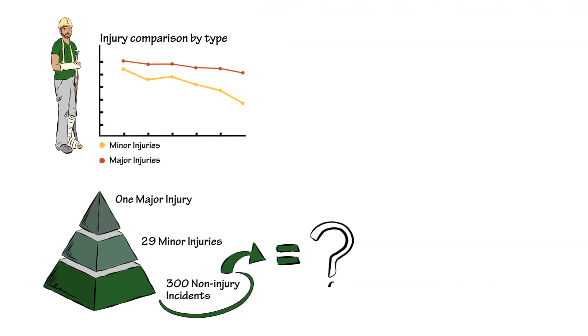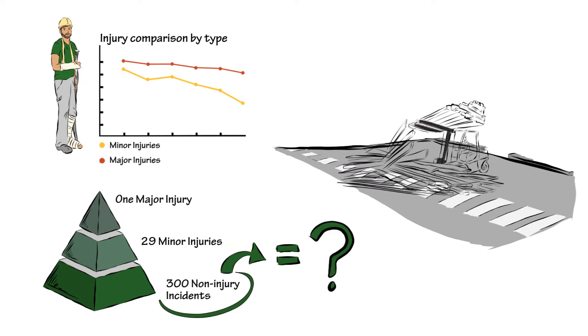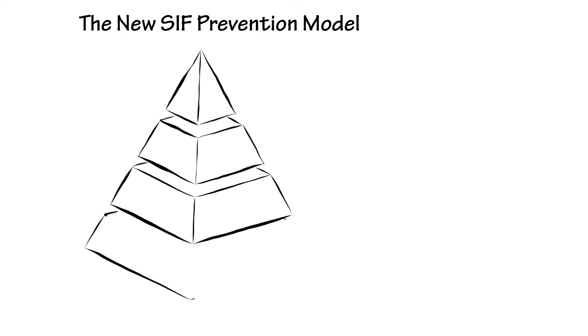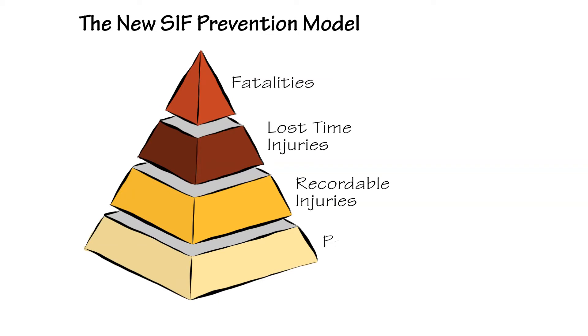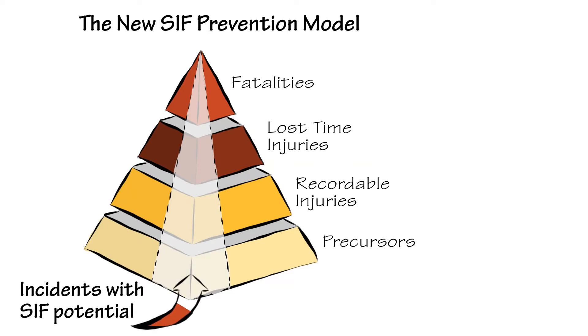Would you investigate all of these non-injury incidents with the same energy? This approach — Significant Incident or Failure Potential, or SIFP — acknowledges that not all non-injury incidents have the same risk or potential for a significant incident that could result in a more serious injury or even a fatality. A fraction of non-injury incidents have a much higher potential for SIF, and identifying and controlling these precursors can significantly reduce SIFs.